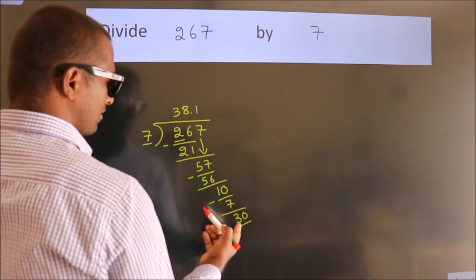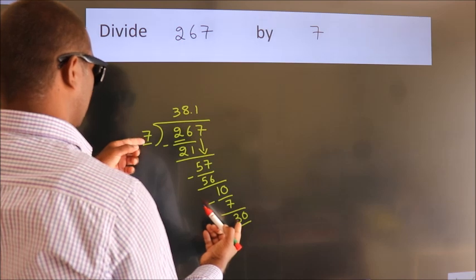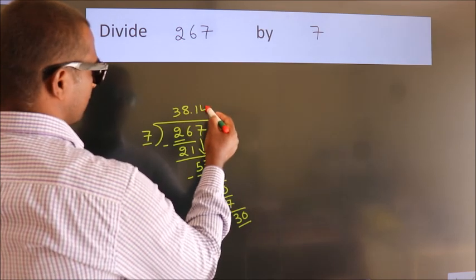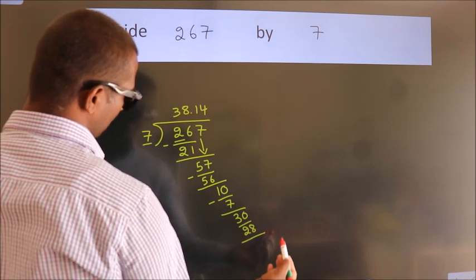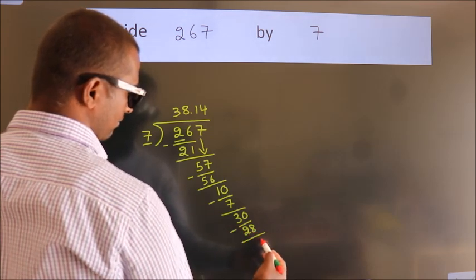A number close to 30 in the 7 table is 7 fourths, 28. Now, we subtract. We get 2.